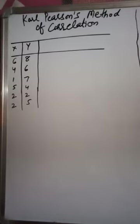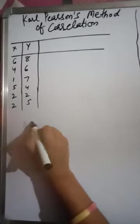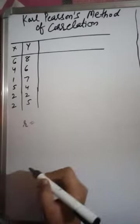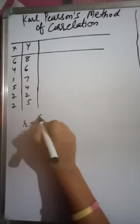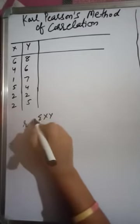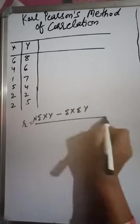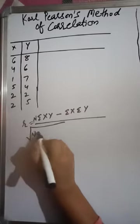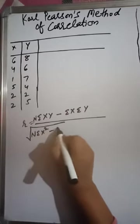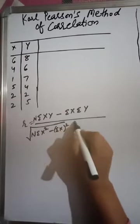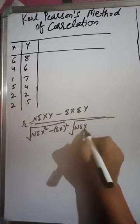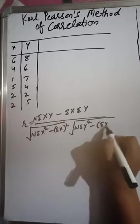For that, I have taken an example — we are given two variables x and y. The direct formula for the coefficient of correlation is: n·Σxy − Σx·Σy, over the square root of (n·Σx² − (Σx)²) multiplied by the square root of (n·Σy² − (Σy)²).